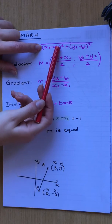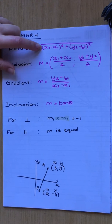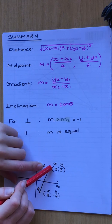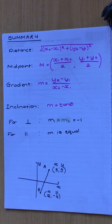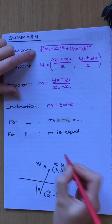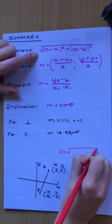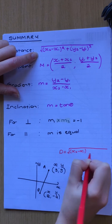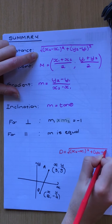Your x2 and x1 are your coordinates — you can choose either one to be 1 or 2. The rule with these formulas is: if I start with this point for x, I'm going to start with that same point again for y. So basically, the distance formula is the square root of x2 minus x1 squared plus y2 minus y1 squared.